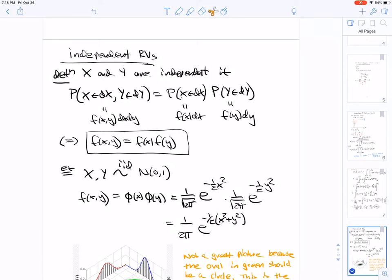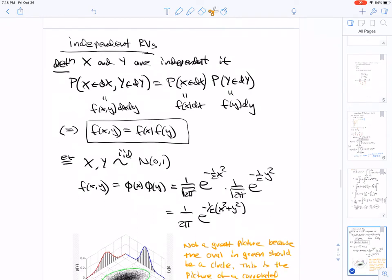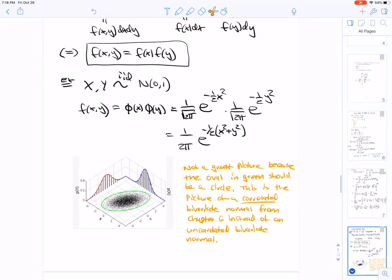An example: X and Y are IID standard normal. Then the joint density here, which is called the uncorrelated bivariate normal, is the product of the two densities. So that's φ(x) φ(y). You can write out here what the joint density looks like.